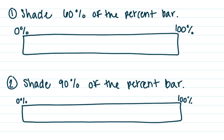So let's talk about how do I set up a percent bar. They want me to shade sixty percent of the percent bar. So the first thing I need to do is I need to figure out what number am I going to count by, so how am I going to divide this bar up.